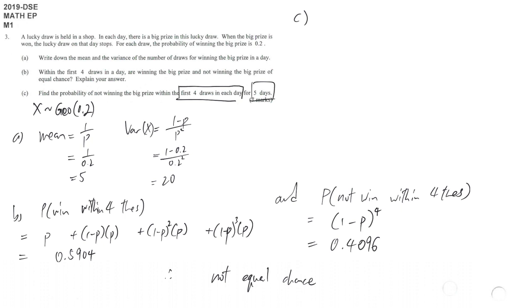First, for each day, not winning in four times is equal to (1-p) to the power of 4, so 0.4096. That means the number of days follows a binomial distribution: five times, with the probability 0.4096 each time this happens.